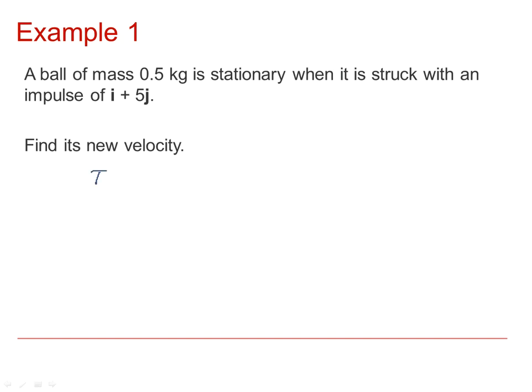We know that the impulse is equal to the change in momentum, so that's mv minus mu. And because it's stationary, u is going to be 0. Therefore, we can say that the impulse, which is writing it as a column vector, is 1, 5, is equal to the mass 0.5 multiplied by the velocity v. And therefore, v is given by the vector 2, 10, which is equal to 2i plus 10j.